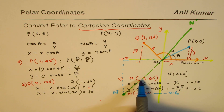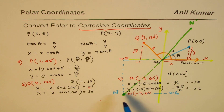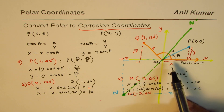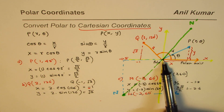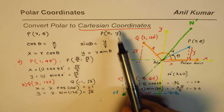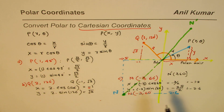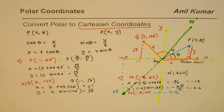I hope that helps you understand how to convert from polar coordinates to Cartesian coordinates and how to sketch them. We are superimposing two coordinate systems — when we talk about polar coordinates we look at the pole and the axis with R and theta, and when we talk about Cartesian we look at X and Y. You can always share and subscribe to my videos. Thank you and all the best.